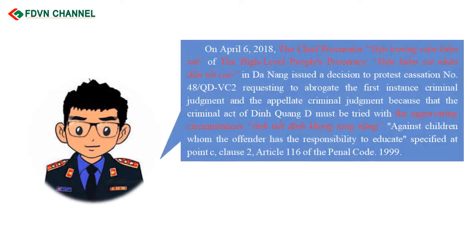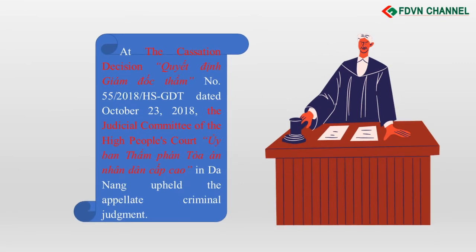On April 6, 2018, the Chief Procurator of the High-Level People's Procuracy in Da Nang issued Cassation Protest No. 48-QDVC2, requesting to abrogate both the first instance and appellate judgments, because the criminal act of Din Kuang D must be tried with the aggravating circumstance of against children whom the offender has the responsibility to educate, specified at Point C, Clause 2, Article 116 of the Penal Code 1999. The Judicial Committee of the High People's Court in Da Nang upheld the Appellate Criminal Judgment.